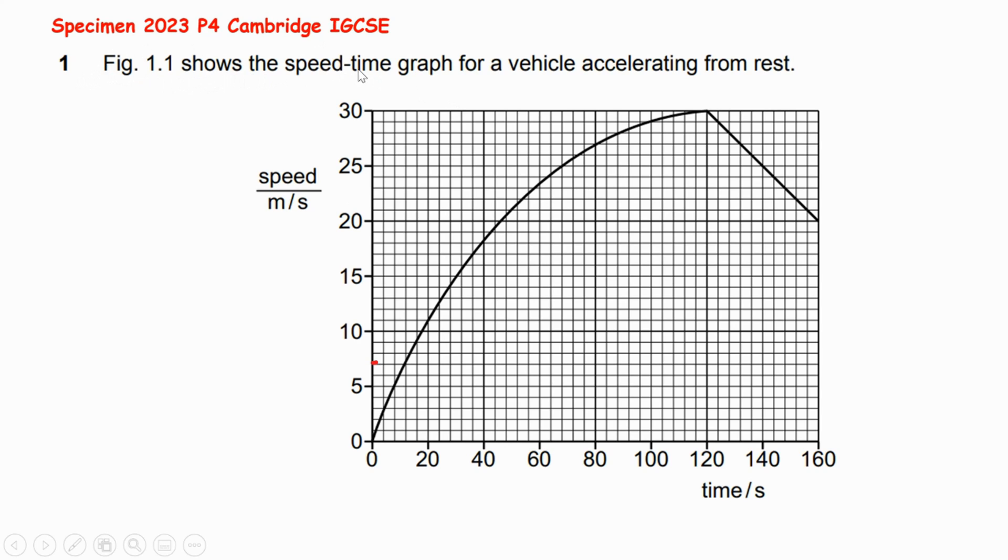Figure 1.1 shows the speed-time graph for a vehicle accelerating from rest, which means initial velocity is zero. The graph starts from zero, becomes curved, and then there is a straight line here. The examiner is asking to calculate the acceleration at 30 seconds. Let me mark it at 30 seconds, at the halfway point between 20 to 40.